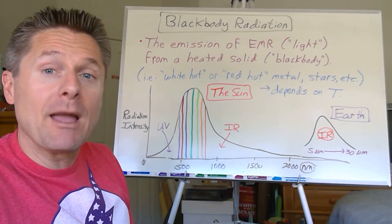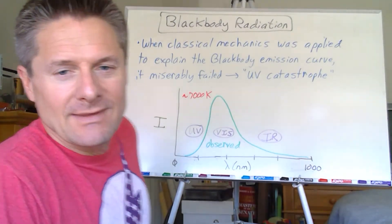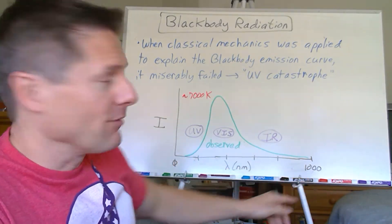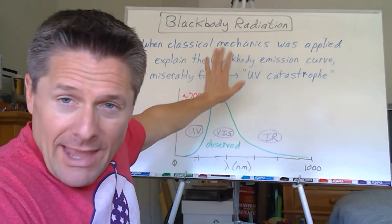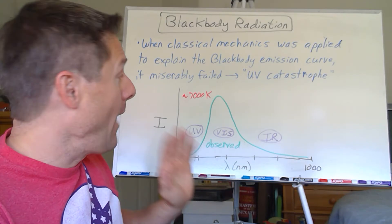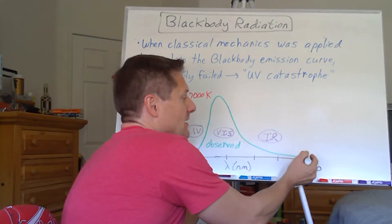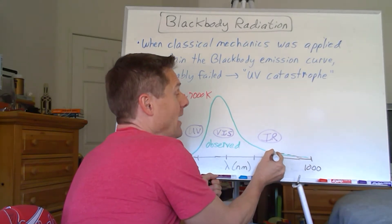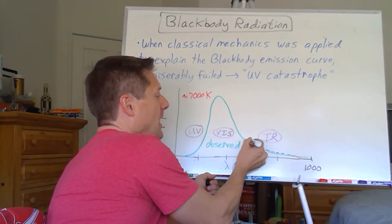Now let's see what happened when they applied classical mechanics — the big 'oh crap' moment. Here's the original black body curve for roughly 7,000 Kelvin: mostly in the visible, some UV, a little infrared. When they applied classical mechanics to predict this curve, it worked pretty well in the infrared and visible region, matching the observation nicely at first.